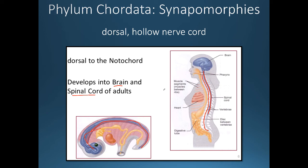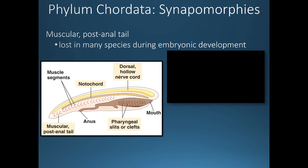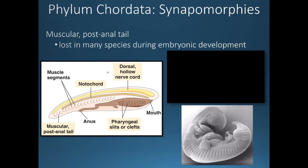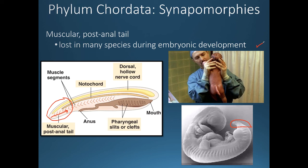All members of phylum Chordata have a post-anal tail during embryonic development, visible in this diagram and in this image of a human embryo. Many animals, including the apes — chimps, gorillas, orangutans, bonobos, and humans — are not born with a tail. Through apoptosis, programmed cell death, the tail cells die off during development so we are born without one. However, occasionally a human is born with a tail; it can be associated with certain syndromes but is usually removed with a simple surgical procedure.